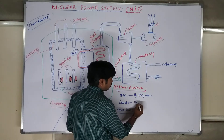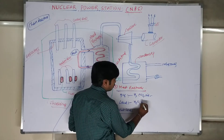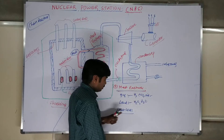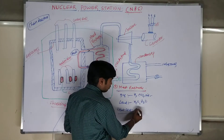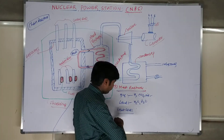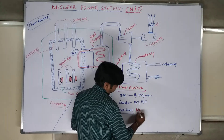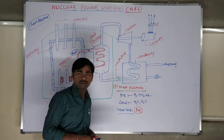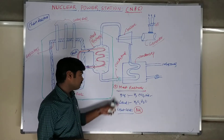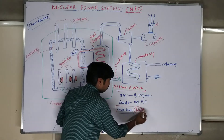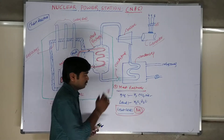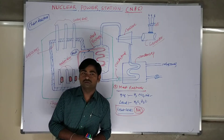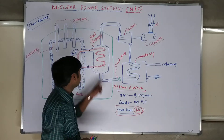For liquids, we are using H2O and D2O as liquid materials. Liquid-solid is nothing but sodium. Out of these 3 types of materials, we are using sodium coolants in the nuclear power station.